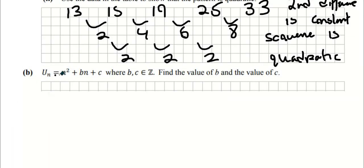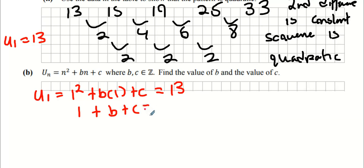Do you know what U1 is? 13. If I replace N with 1, the answer has to be 13. So 1 squared is 1, plus B plus C equals 13. Throw the 1 to the other side, and you get B plus C equals 12.